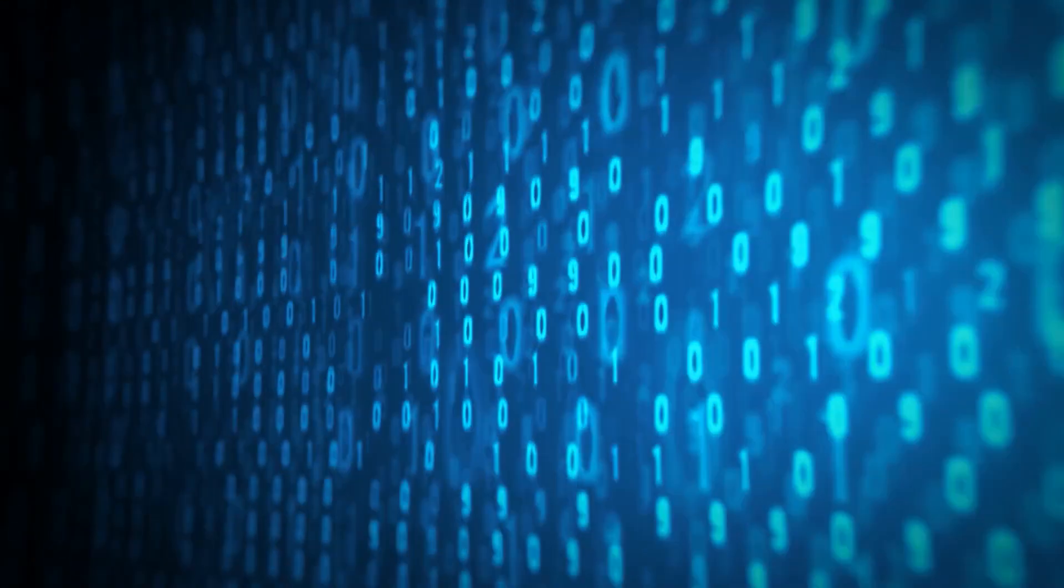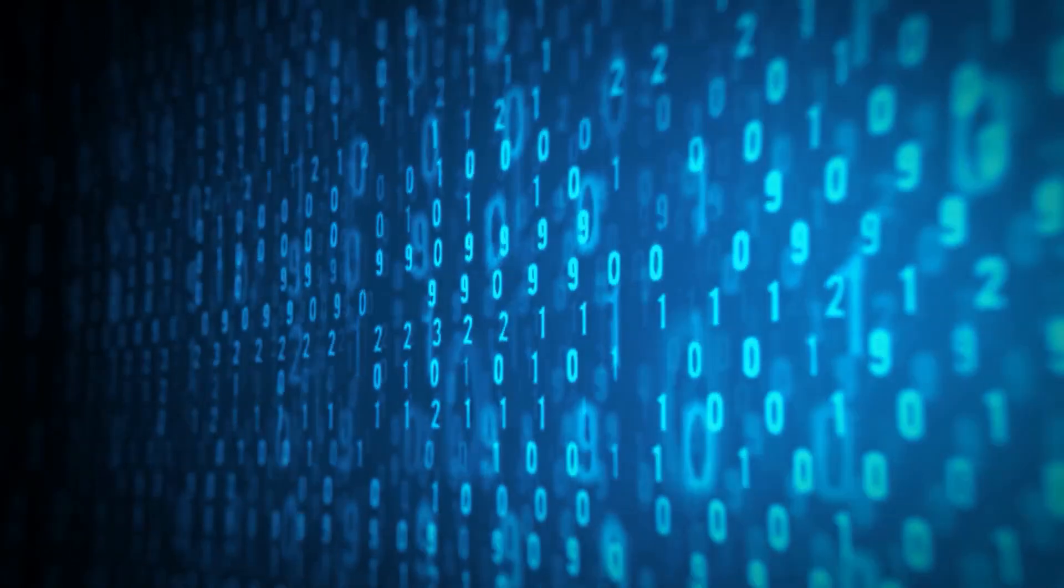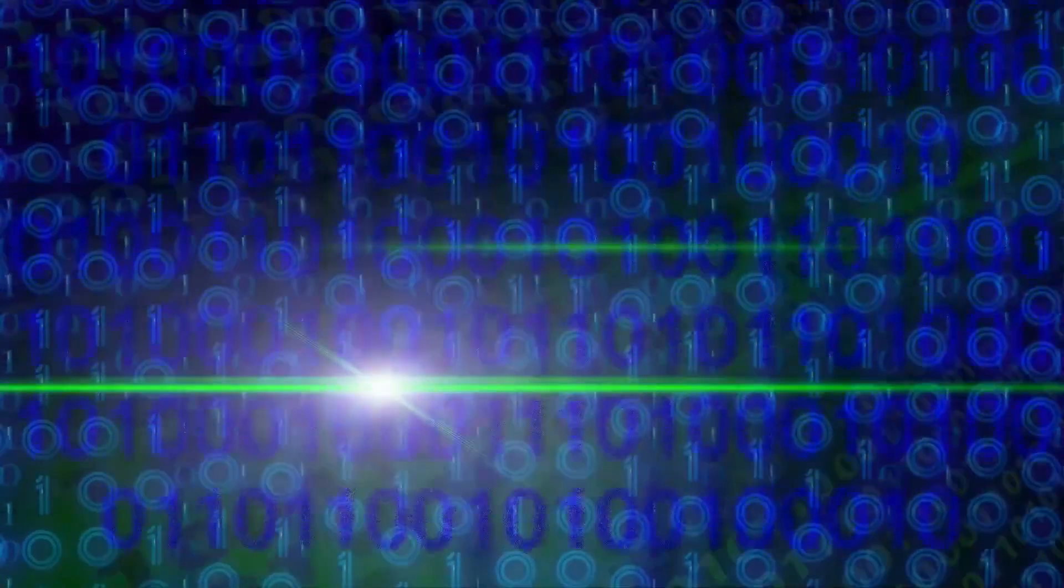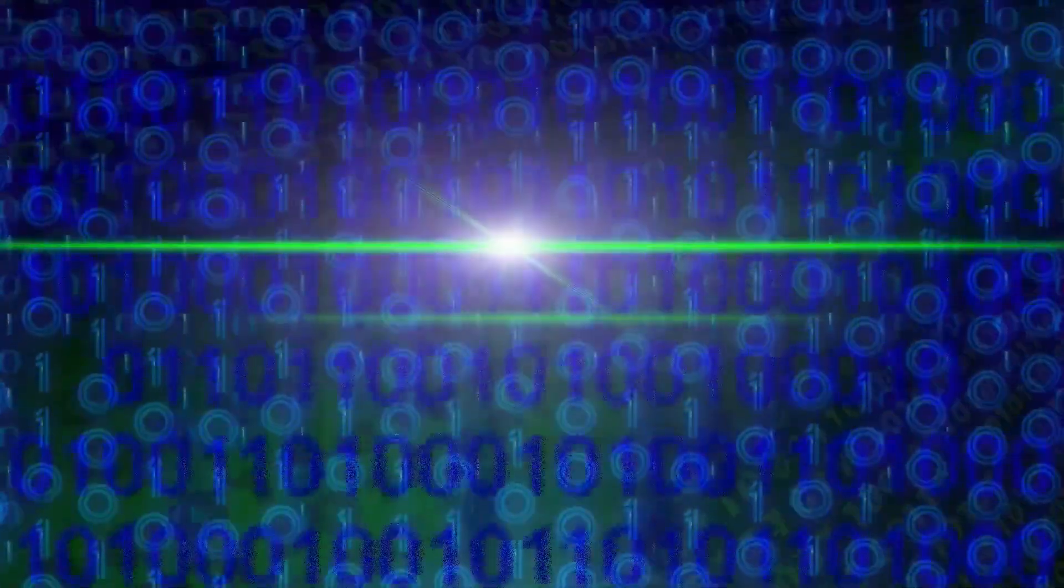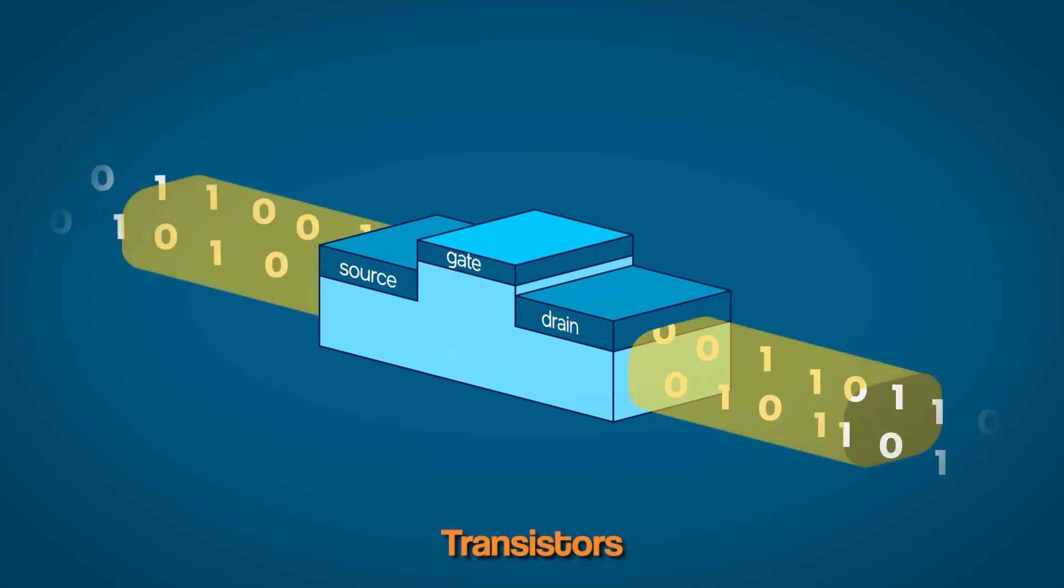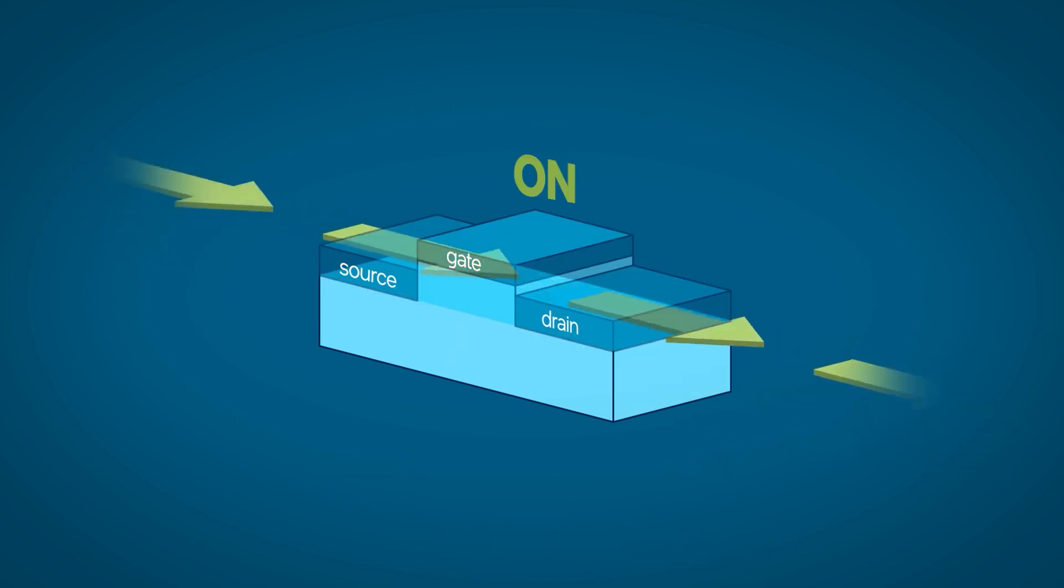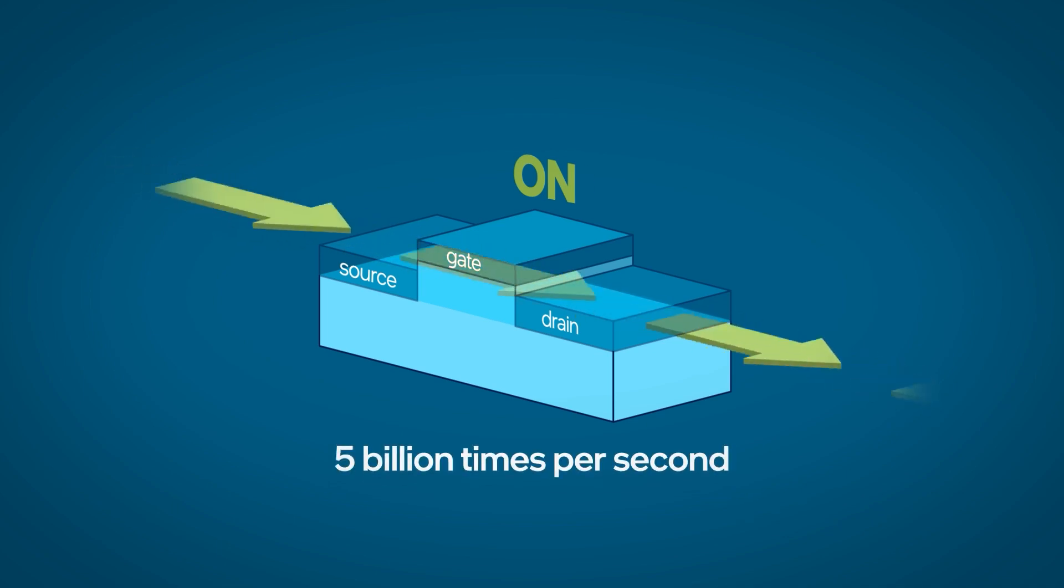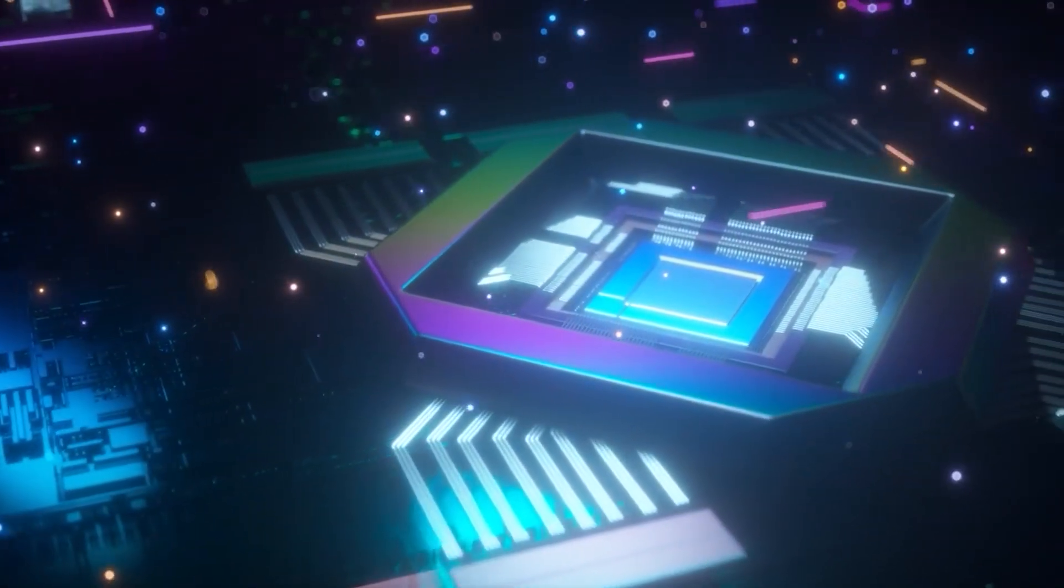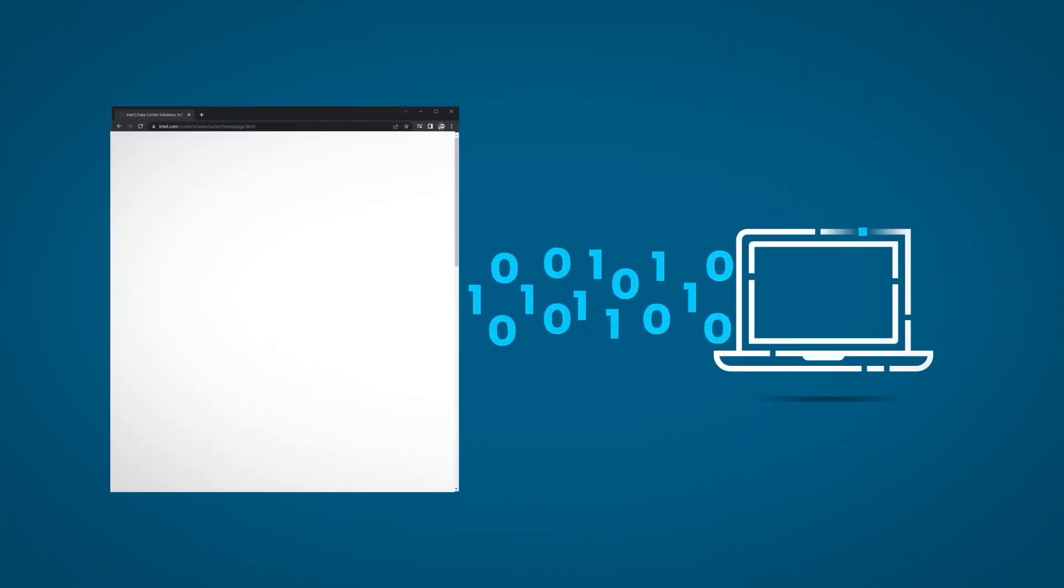However, a bit can also represent up or down, left or right. The key is that a bit can represent one of two opposing states. In the real world, computers use transistors to physically express bits. Each transistor can exist in a state of on or off. If you take a bunch of transistors and line them up together, you can process a lot of numbers at the same time.